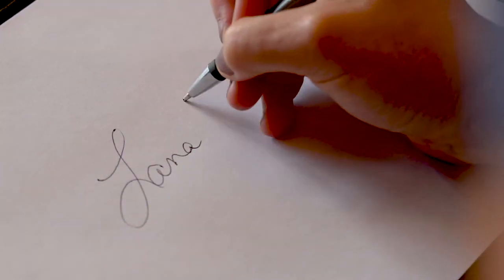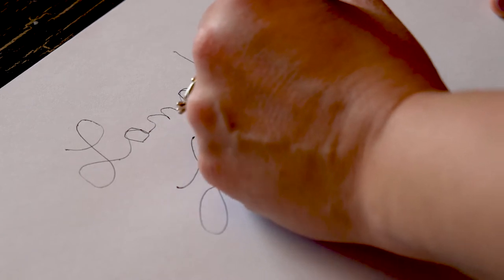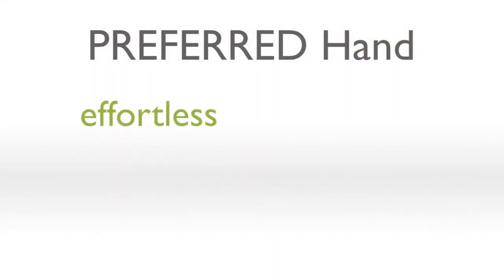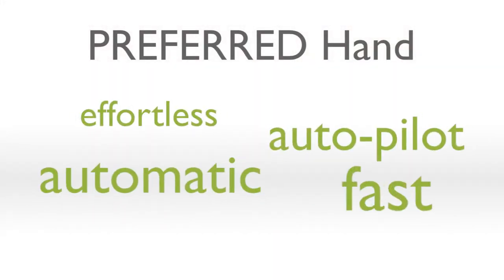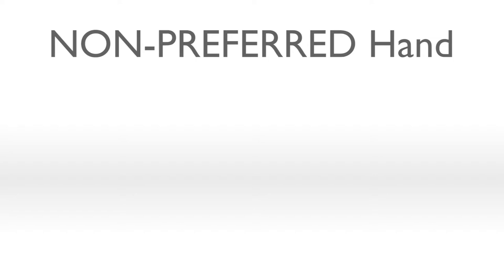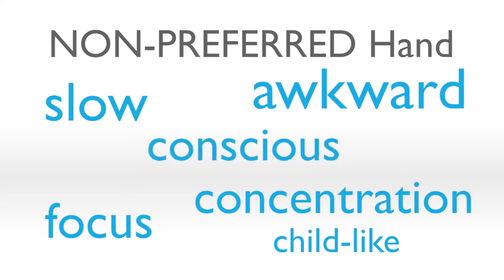To demonstrate this concept of opposites, I want you to sign your name — your signature on a piece of paper. Now put the pen in the other hand, the opposite hand, and sign your name again. When you used your preferred hand, you'd describe signing as effortless, autopilot, automatic, fast, natural, and unconscious. But when you switched to your non-preferred hand, it was harder — you have to focus, concentration, it's slow, awkward, looks childlike, and very conscious.